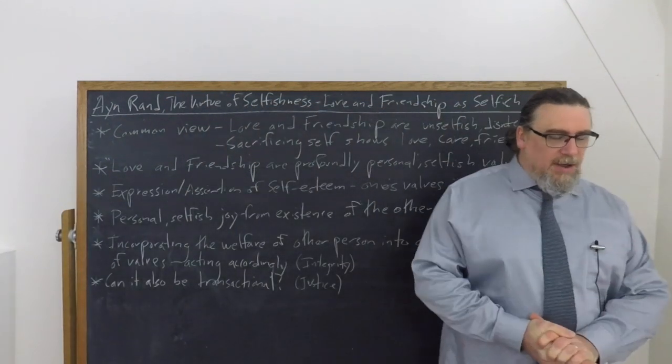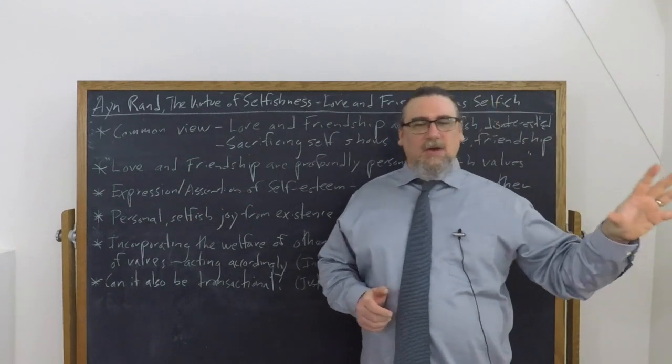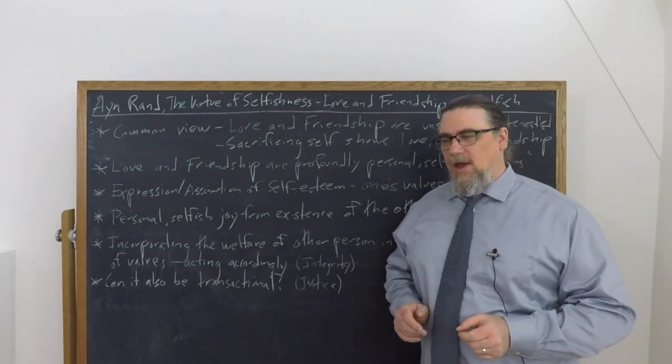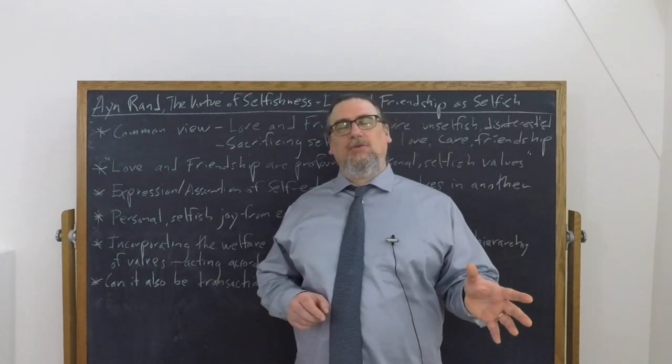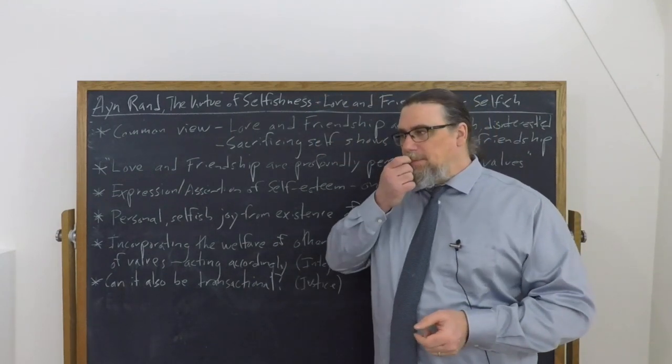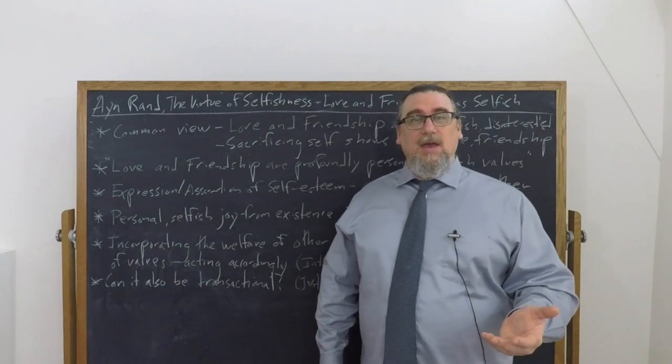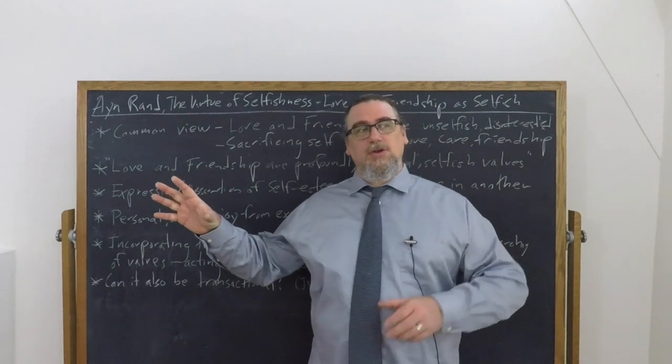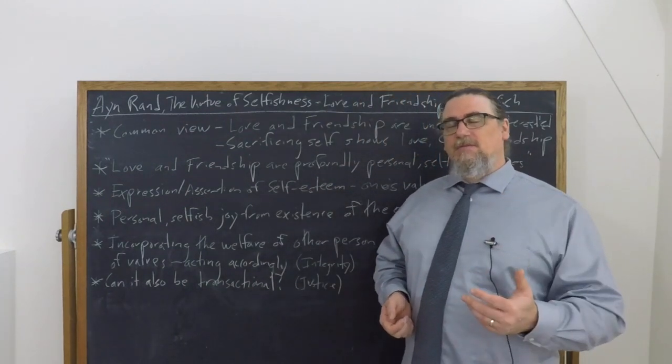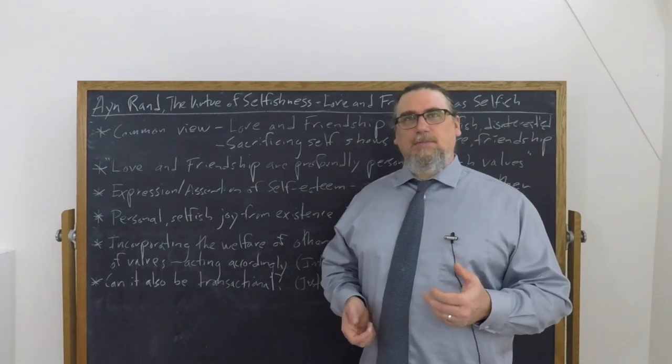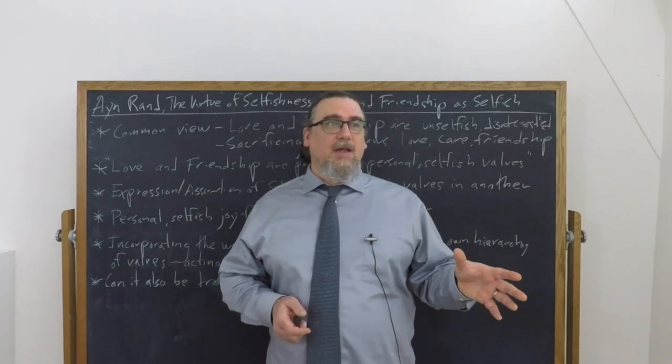There's a really nice short discussion there about the nature of love and friendship and what is going on when we make sacrifices or take others into account. The charge that's made typically goes like this, and it's not just against egoists like Rand but also against hedonists of various sorts. The Epicureans have this thrown against them in ancient times. It's one thing to say that we don't owe anything to strangers or even perhaps to our neighbors that we're not that close with. But what about close personal relationships?